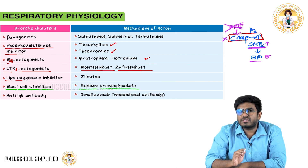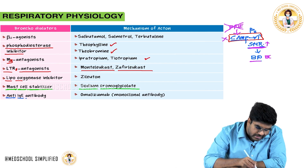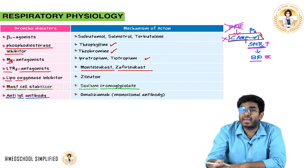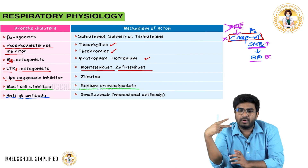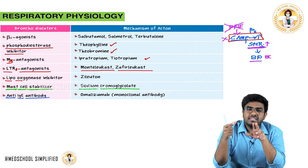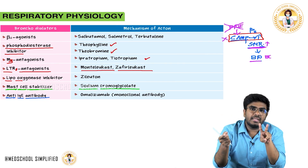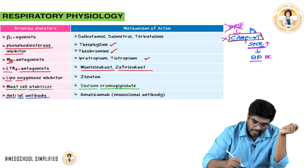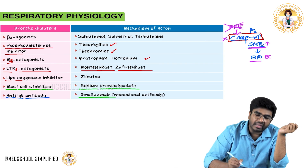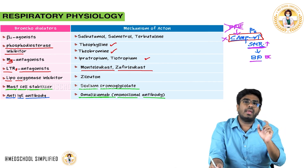Cross-linking of IgE antibodies on mast cells triggers degranulation. To block this, anti-IgE monoclonal antibodies have been produced pharmaceutically. These antibodies neutralize IgE antibodies so they can no longer be cross-linked by allergens. The anti-IgE monoclonal antibody is omalizumab — anything ending in '-mab' is a monoclonal antibody.